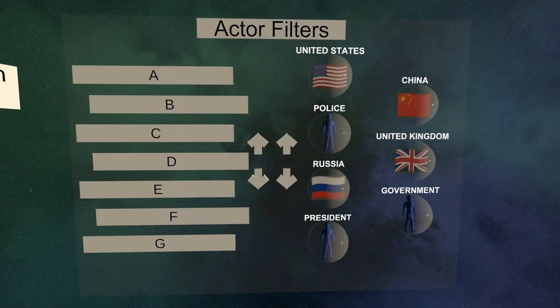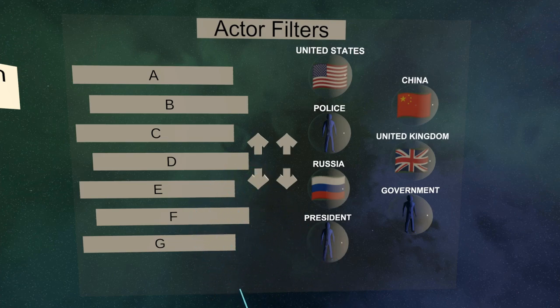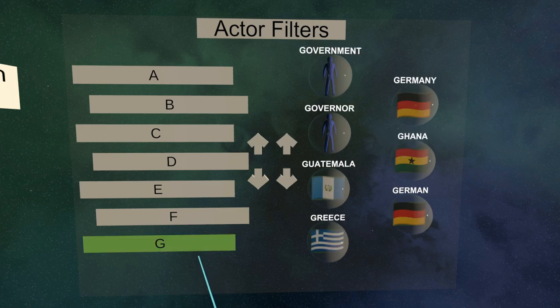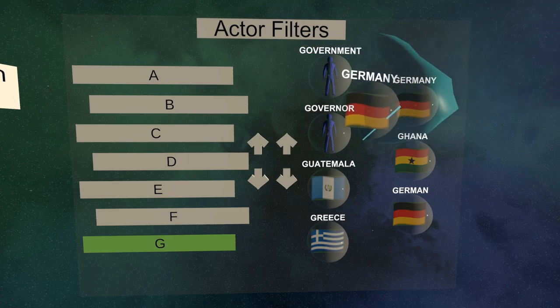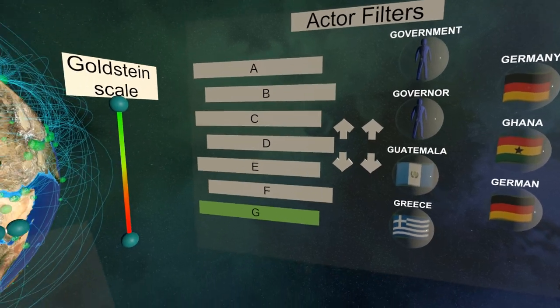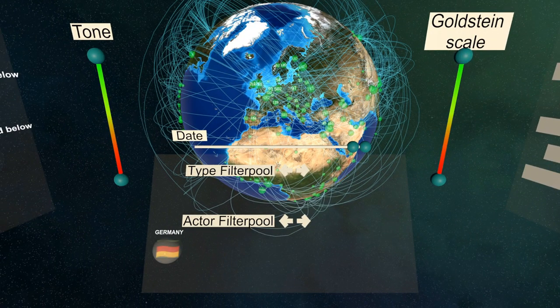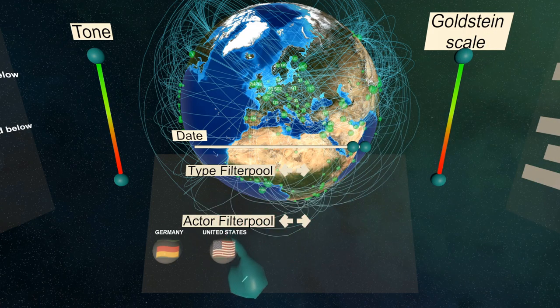To the right you'll find a list of all actors involved in the currently displayed events. This list is also sorted by the number of occurrences of these actors and can be grouped by their initial. To only view events involving Germany, you can grab that actor and drop them in the filter pool. To view events involving Germany or the US, you can take the US and also drop them in the filter pool.